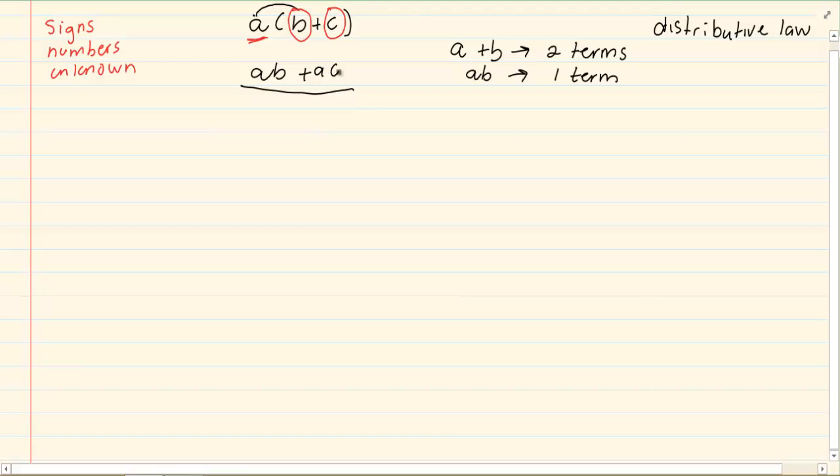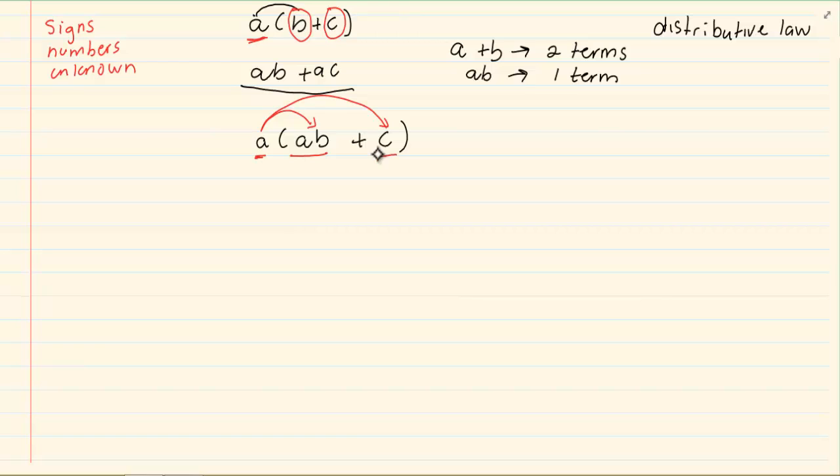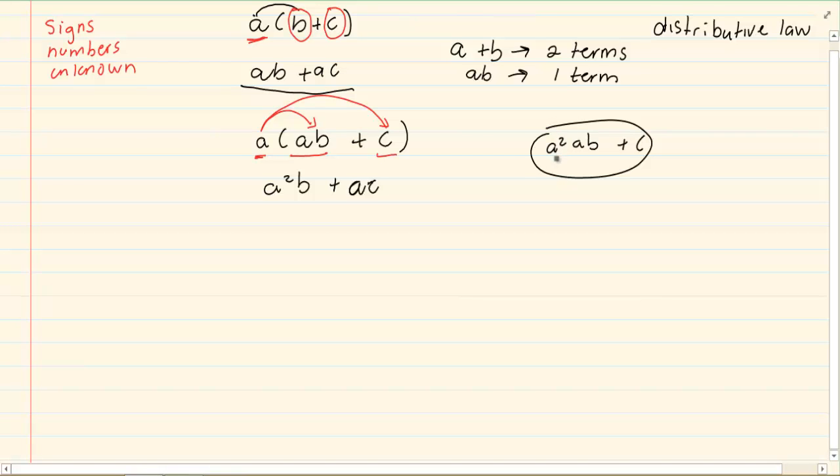If you are given a term that is made out of three pieces. In other words, I have given you A into AB plus C. The distributive law says that the number outside or the term outside goes to every term inside. Meaning that this A outside will go to AB and will go to C. It will not go to A and B and C. So your final answer is A squared B plus AC. It is not A squared AB plus C. It does not go to every piece.